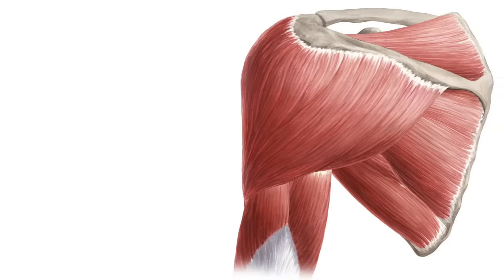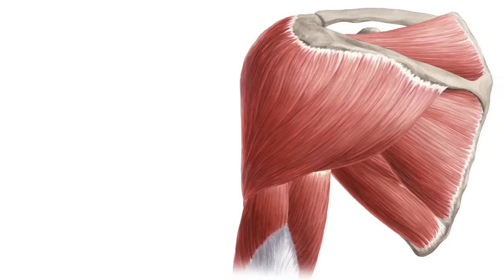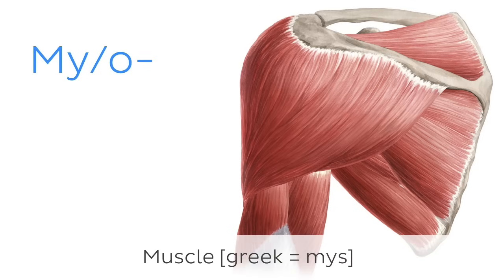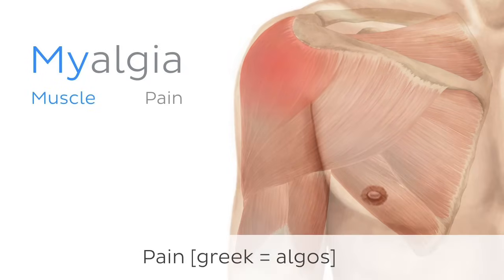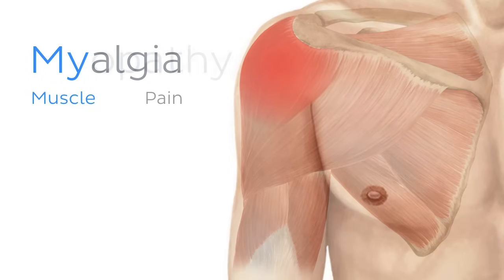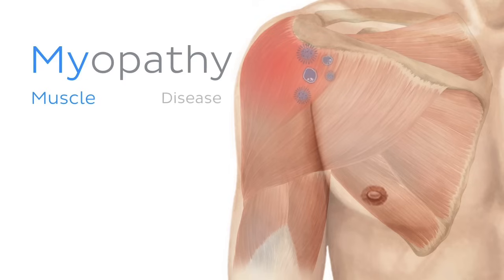Now, I want to throw in a few of those roots and prefixes. This will help you decipher terms about conditions and processes related to muscular tissue. Perhaps the most important term related to muscle is myo, which comes from the Greek mys for muscle. It can be used as the root in words like myalgia, which is a term for muscle pain. Another is myopathy, the general term for a disease specifically affecting muscle tissue.